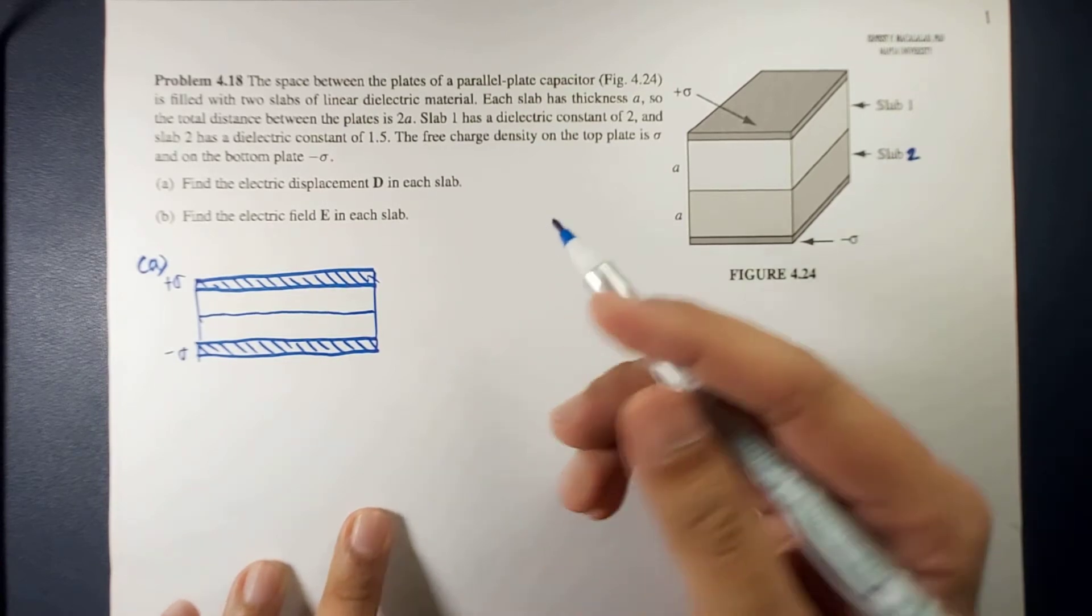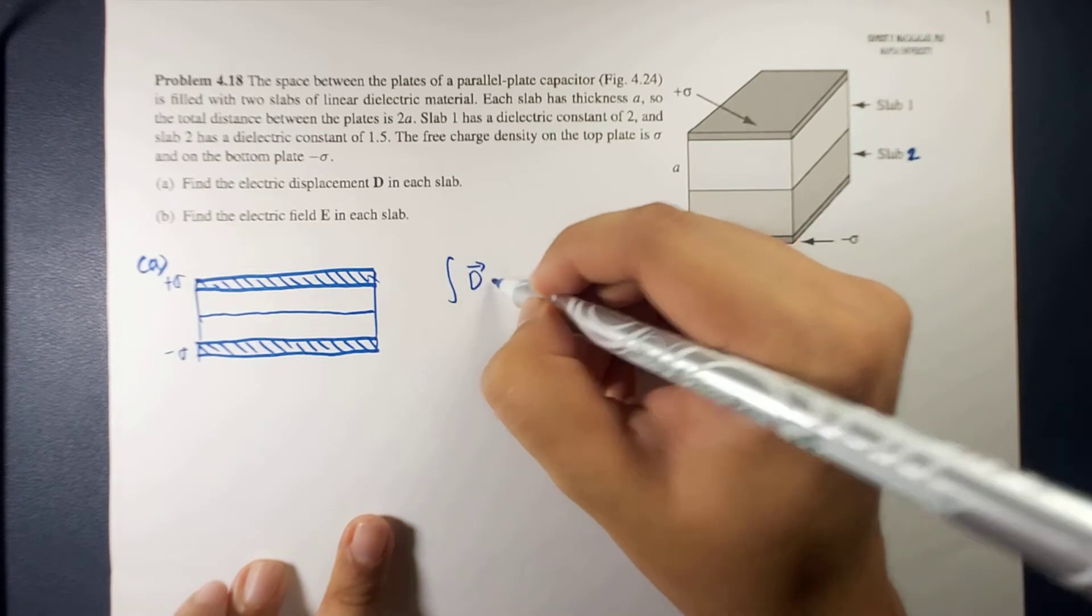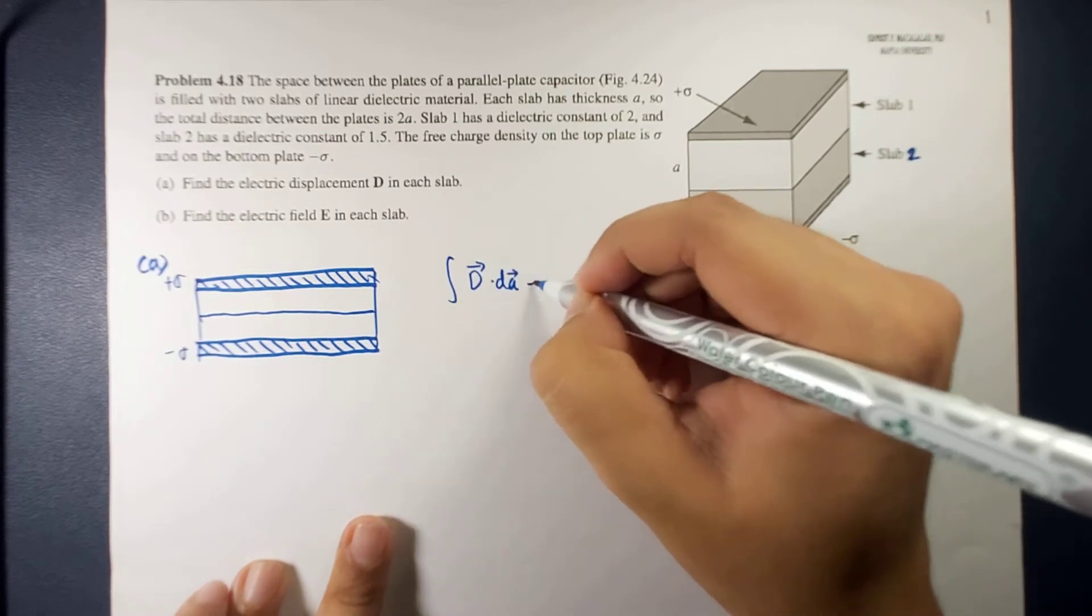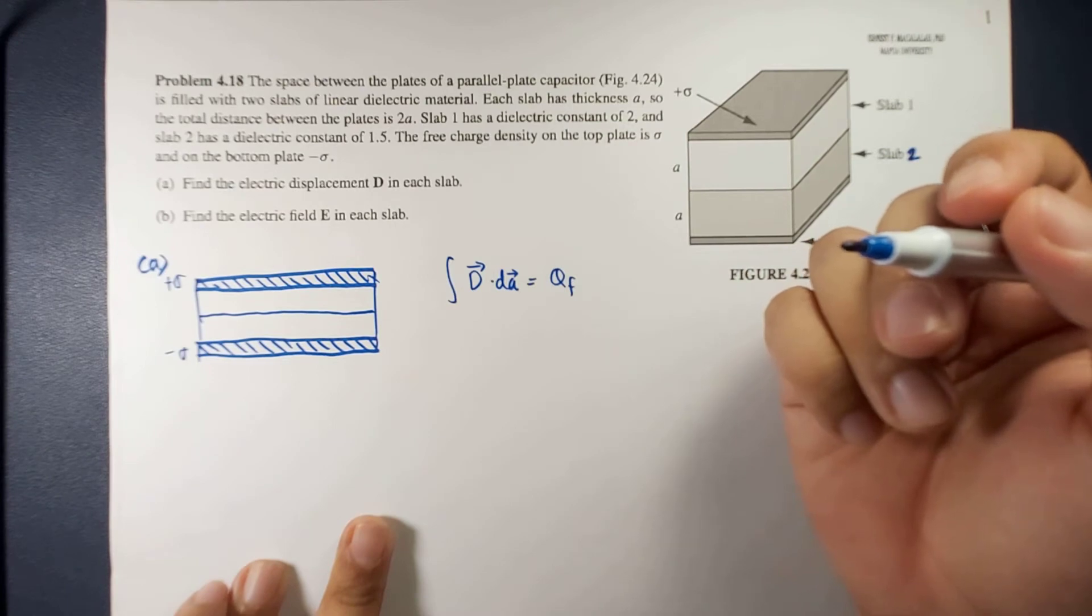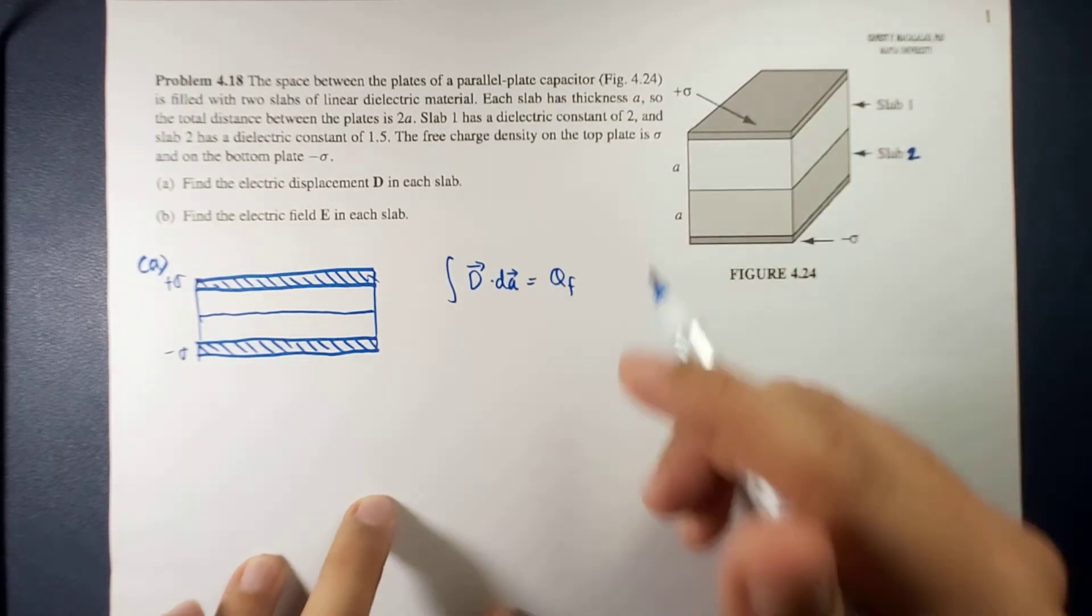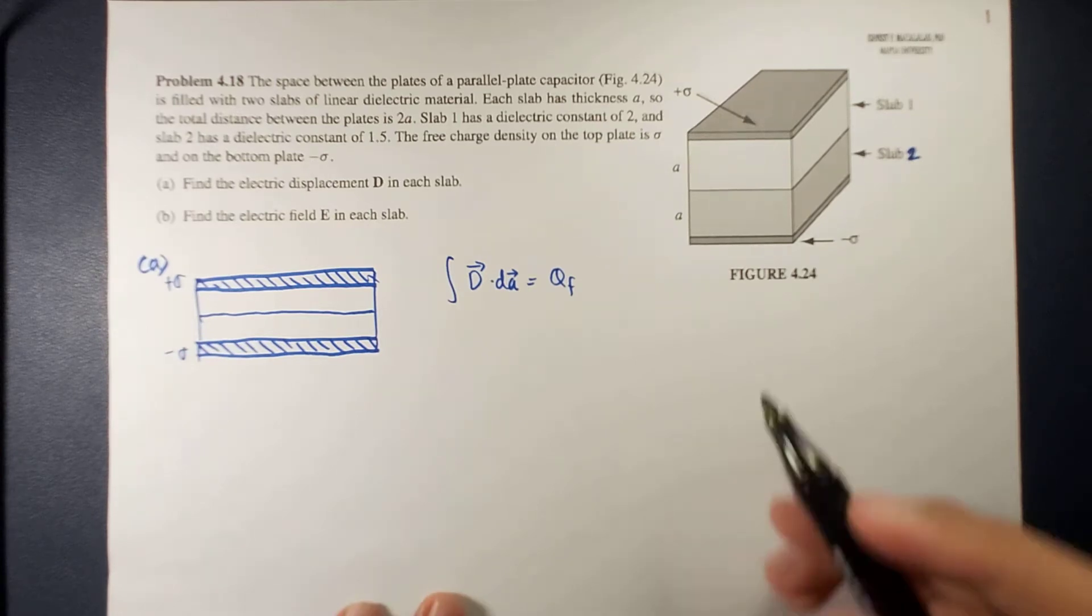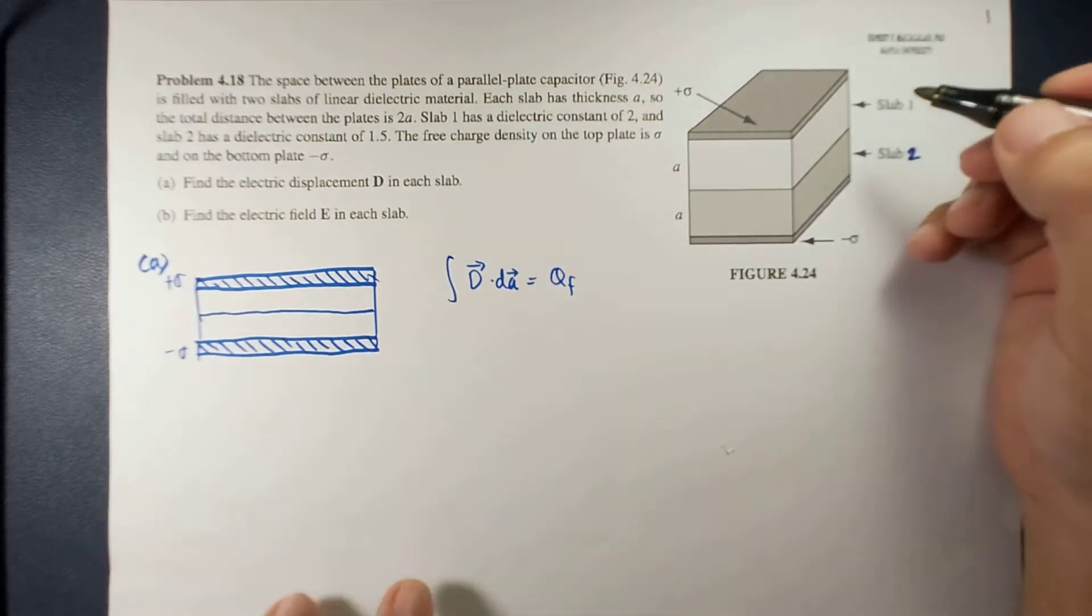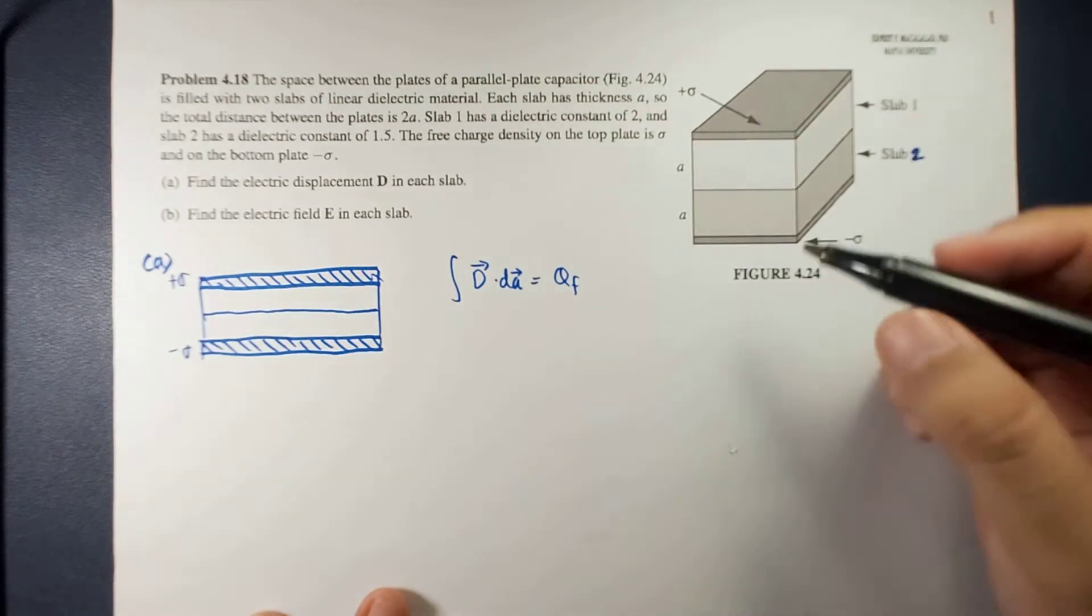Okay, so if we're going to use Gauss' law, so that's the integral of D dot dA equals q free. Okay, so if we're going to take note of the Gaussian surface, because this is a plate, we're going to use a pillbox, a Gaussian surface that is the shape of a pillbox.